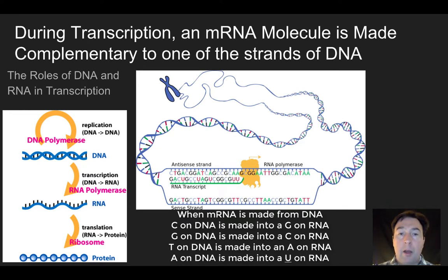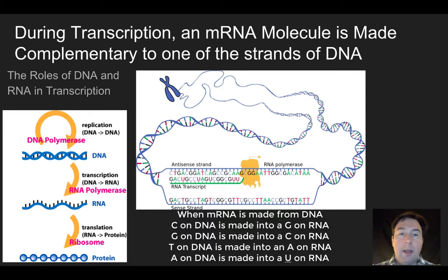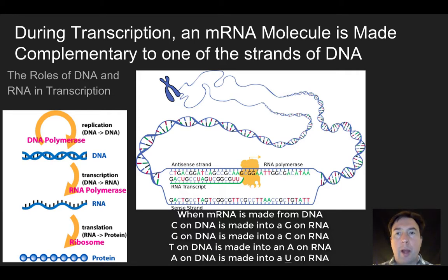We use the base pairing rules just like we saw previously. Where we had a cytosine on DNA, we bring in a guanine made of RNA, or ribonucleic acid, that will pair with it. We make a single-stranded RNA transcript based on complementary base pairing. One key difference: RNA does not have thymines. Where you have an adenine on DNA, you'll bring in a U, or uracil, instead.